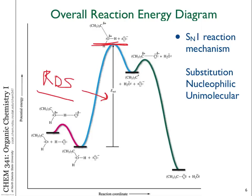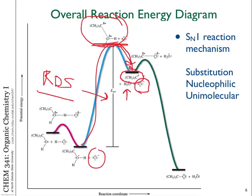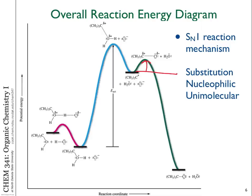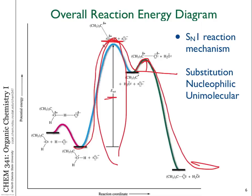Once you get to that highest point, you go to the carbocation intermediate — the carbon with the plus charge — and we've also generated H2O. The chloride ion generated in the first step is still present, but it's not involved in going from the protonated alcohol to the carbocation. Once you get to the carbocation, you can form the new bond to chlorine in the third step. The activation energy for that step from there is very small, so once you climb up to the top of that hill, it just goes all the way down quite rapidly.